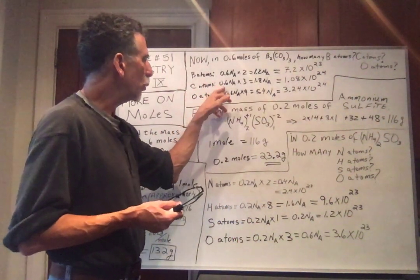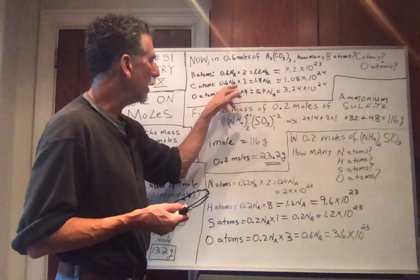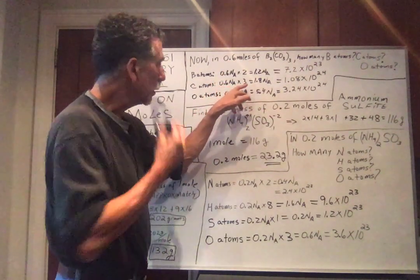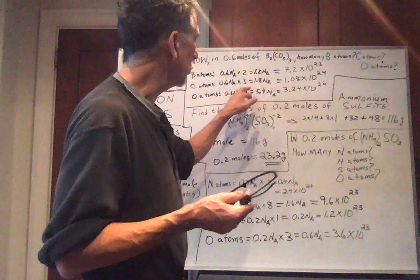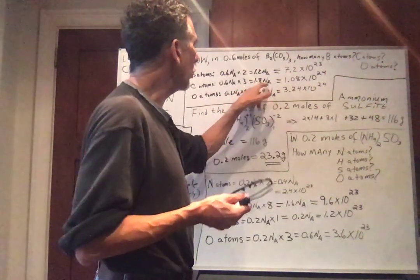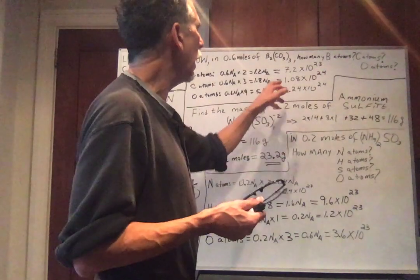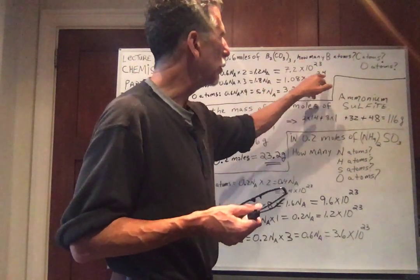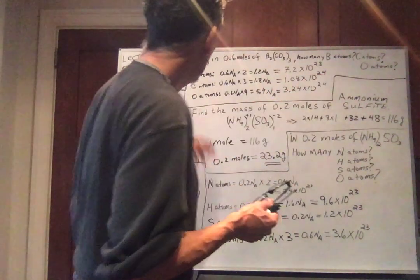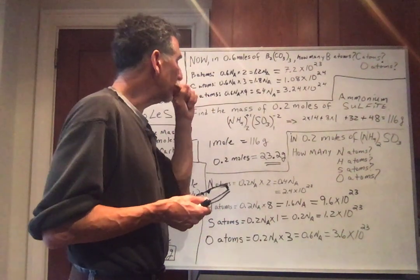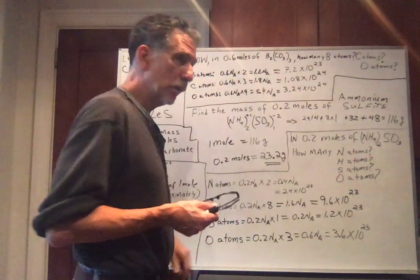Carbon atoms. Once again 0.6 moles. 0.6 NA. We had 3 carbon atoms. So 3 times 0.6. 1.8 NA. And 1.8 times 6 times 10 to the 23rd. And we have 1.08 times 10 to the 24th carbon atoms in 0.6 moles of boron carbonate.